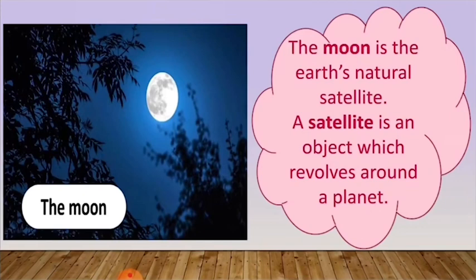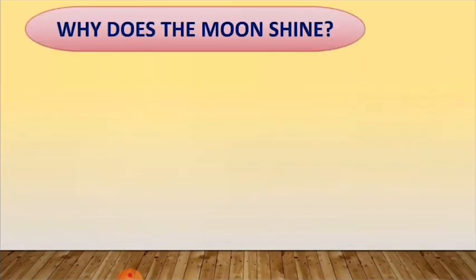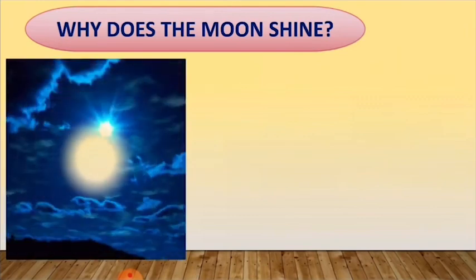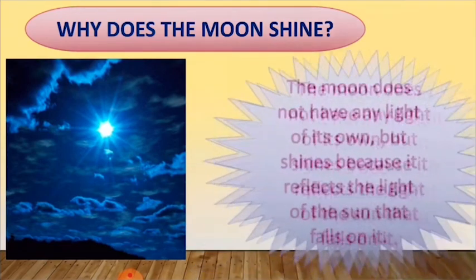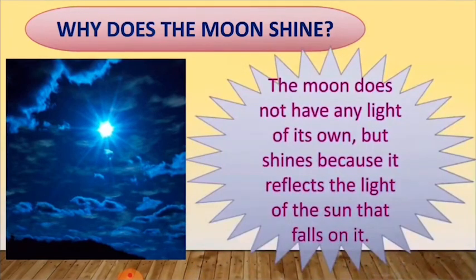Children, have you seen the moon shining brightly in the night sky? Do you know the moon does not have any light of its own? So you might be wondering why and how does the moon shine. The answer is it shines because it reflects the light of the sun that falls on it.